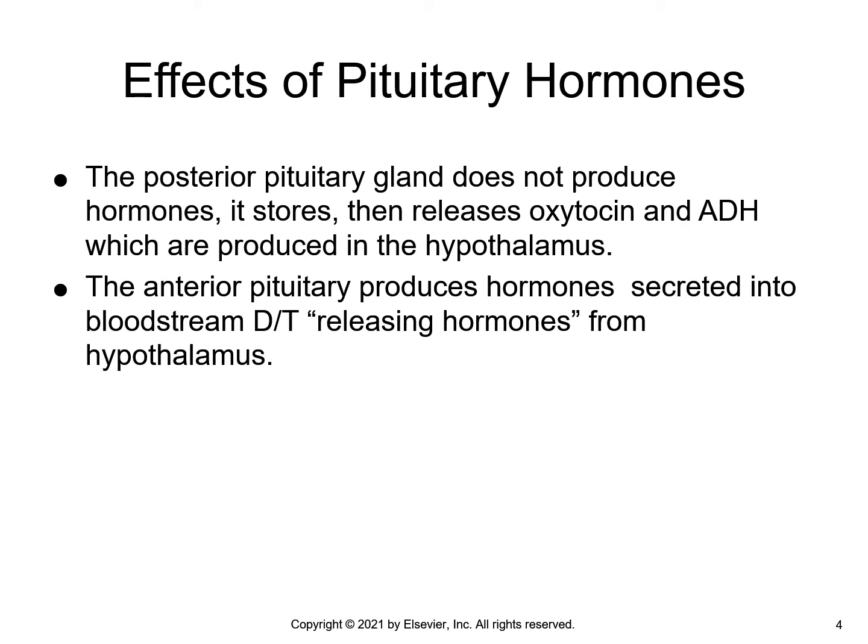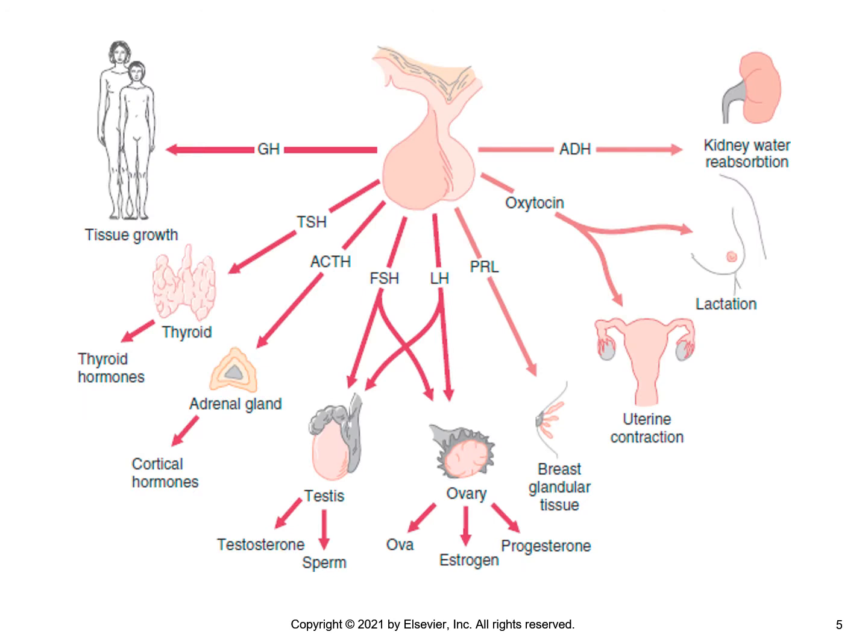Any dysfunction of the pituitary gland will affect one or more of the hormones and their target organs. The hormones from the pituitary gland include: ACTH (adrenocorticotropic hormone), ADH (antidiuretic hormone), FSH (follicle stimulating hormone), GH (growth hormone), LH (luteinizing hormone), PRL (prolactin), and TSH (thyroid stimulating hormone).